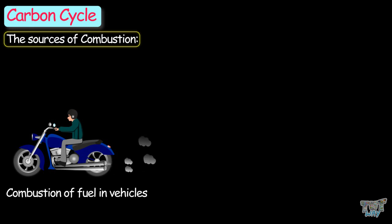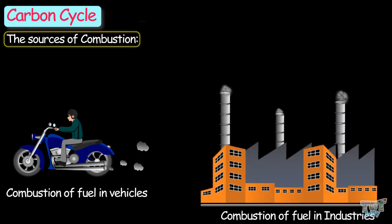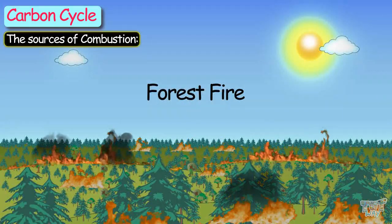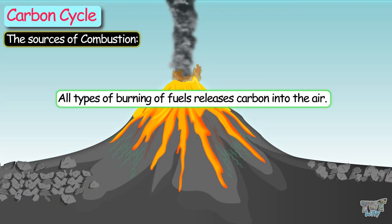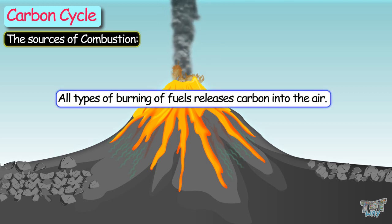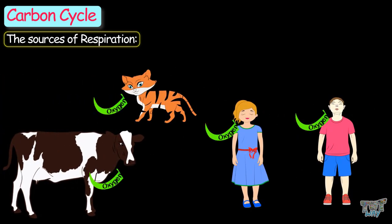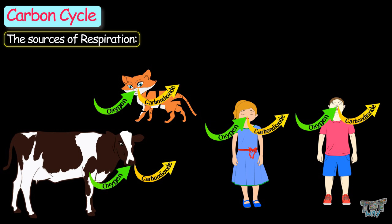Let's first see the sources of combustion. The sources of combustion can be combustion of fuel in vehicles, combustion of fuel in industries, forest fires, and volcanoes. So all types of burning of fuels releases carbon into the atmosphere. Now let's learn the sources of respiration. All animals respire and release carbon dioxide into the atmosphere.